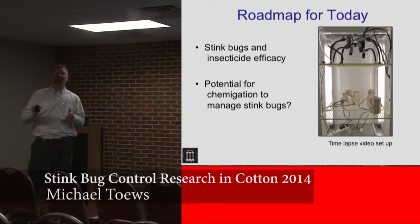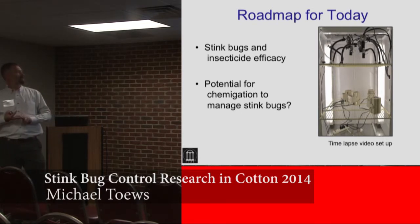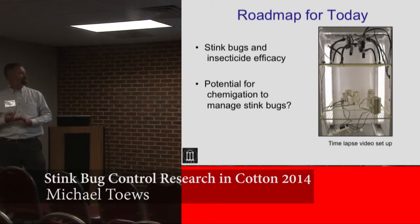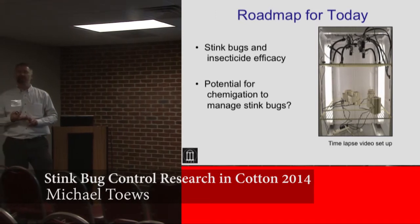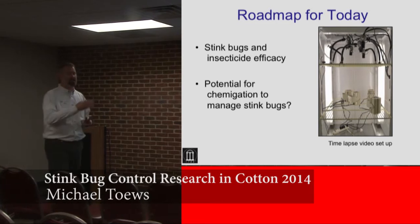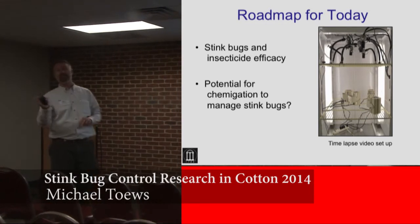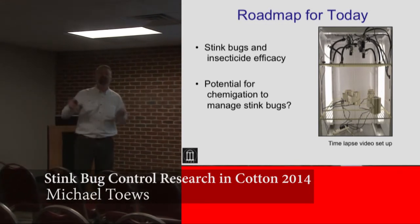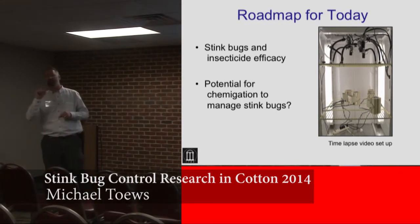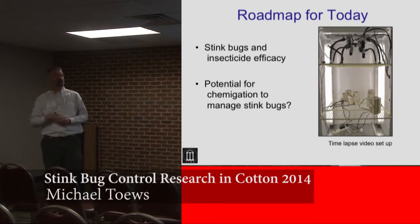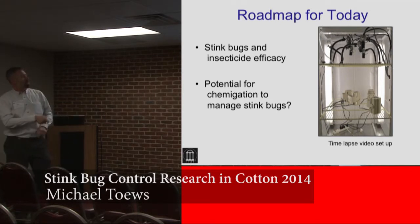In terms of the roadmap today, I'm going to talk about two different projects. One is looking at efficacy with different classes of chemistries available to you. The second is considering the idea that we can put out all of our stink bug insecticides through the pivot — this idea of chemigation, where we're injecting insecticide into the irrigation water as it goes around. We'll talk about some potential setups there.